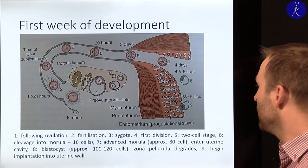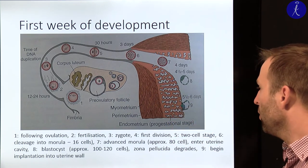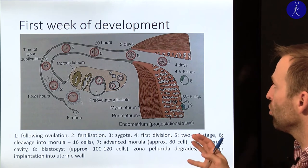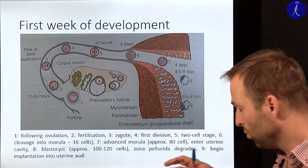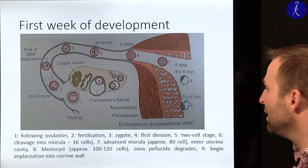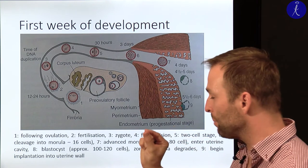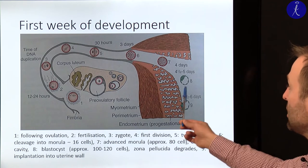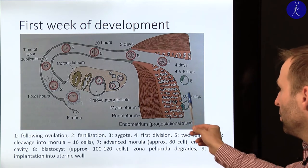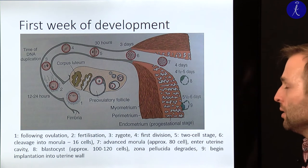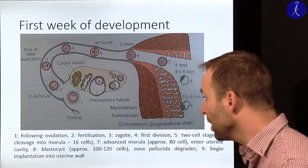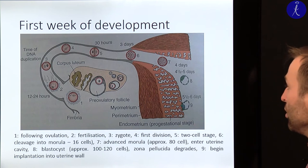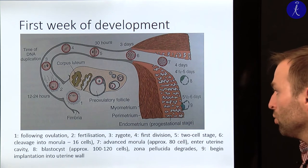As it enters the uterine cavity it is already an advanced morula with approximately 80 cells. At this stage the inner cells of the morula start to shrink and become more compact, fluid starts to accumulate inside, small gaps between cells enlarge and fill with fluid, and when this process is finished you have the blastocyst. At about developmental day six it starts to implant, invading the uterine mucous membrane — this is called implantation.